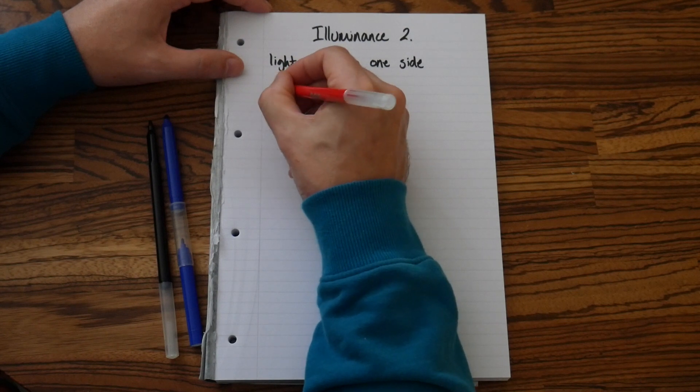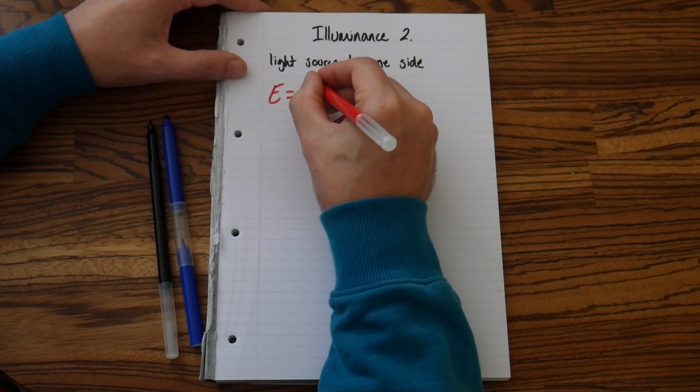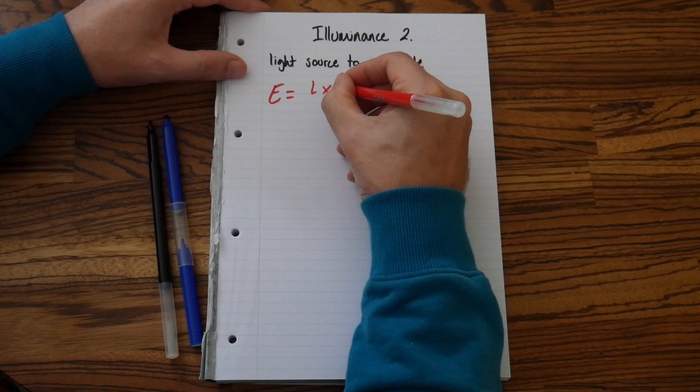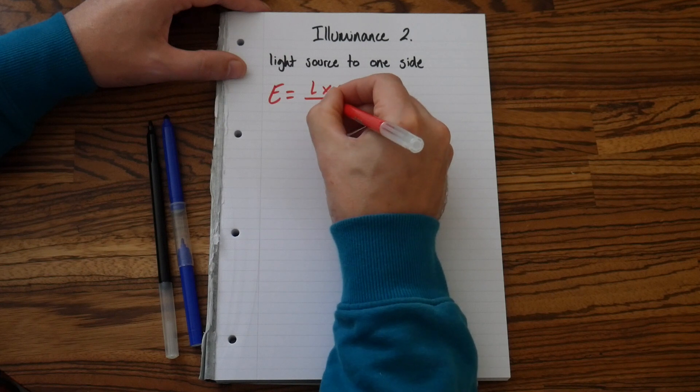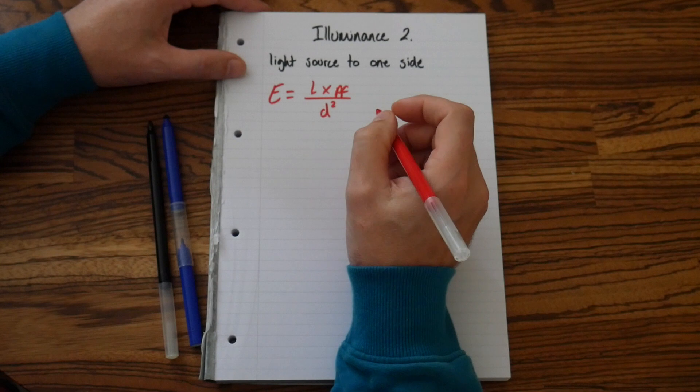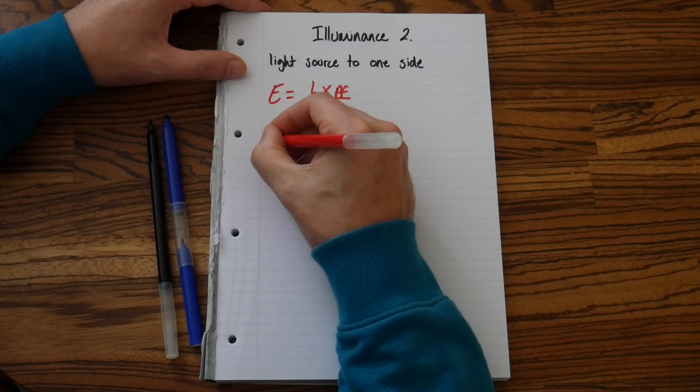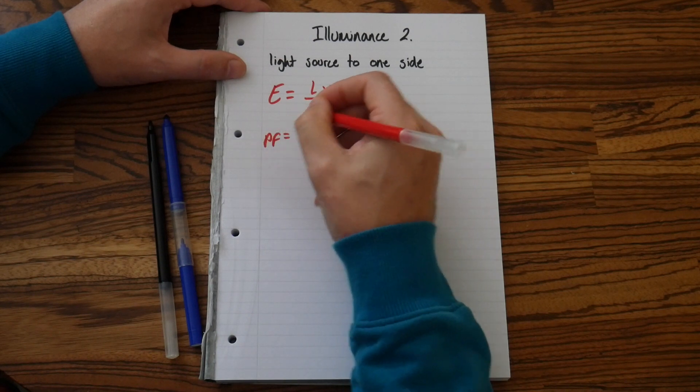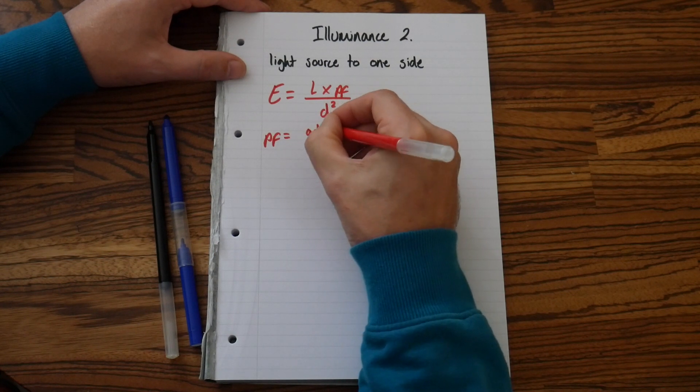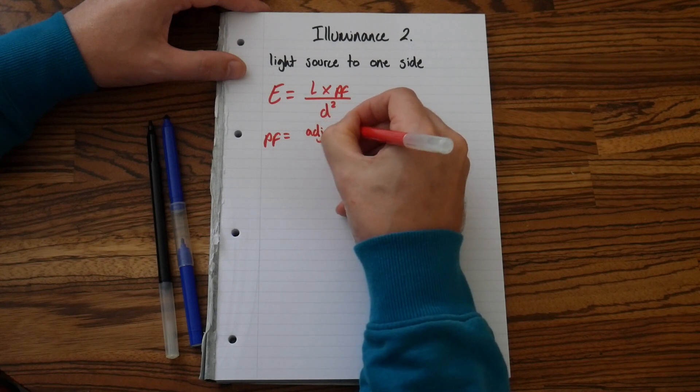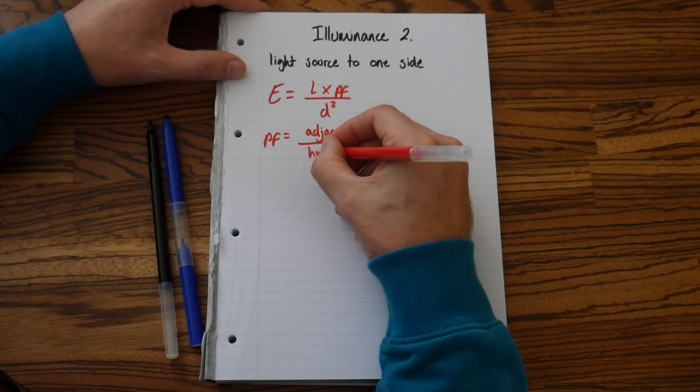And this formula is E equals L times PF over D squared. And we don't transpose this formula, but we write down the next formula for this one, which would be PF equals the adjacent over the hypotenuse.